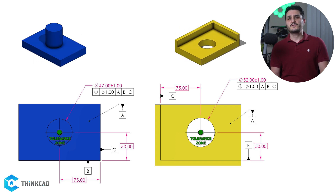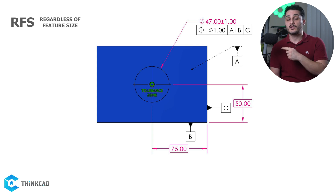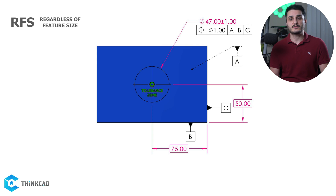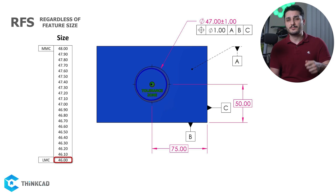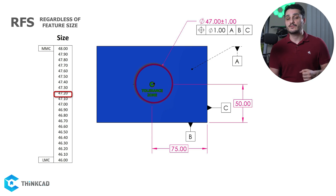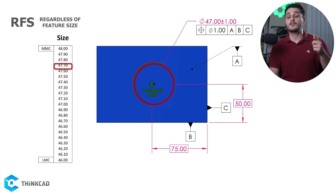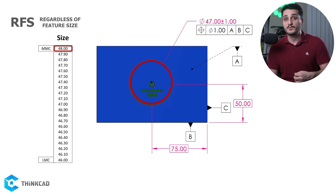Let's focus on the boss feature first. This is RFS, or regardless of feature size, because there are no material modifiers in our GD&T callout. This means our boss feature can be off-center with a tolerance of 1 mm no matter what its size is. Our size can change from LMC of 46 mm up to MMC of 48 mm while having the same 1 mm position tolerance.